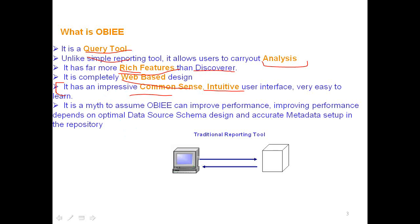An important thing: people always think about the reporting layer — it's a myth to assume OBI can improve performance. People think if I move from OBI to Cognos, or from Cognos to Business Objects or any other reporting tool, they will get a performance gain of 50%. This is how marketing people project it, but that is not absolutely true.